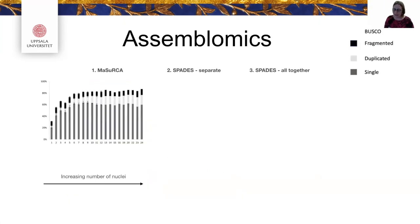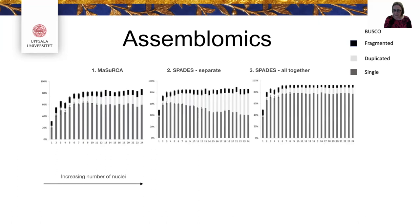We evaluated assemblies by looking at BUSCO genes expected as single copies — we expect to find 290. With increasing numbers of nuclei, we see single-copy genes (dark gray) increase, but light gray duplications start to accumulate as we add more data. With SPAdes-assembled single nuclei, we get bigger assemblies per nucleus, but as soon as we start putting them together we accumulate a lot of artificial duplications that should not be there.